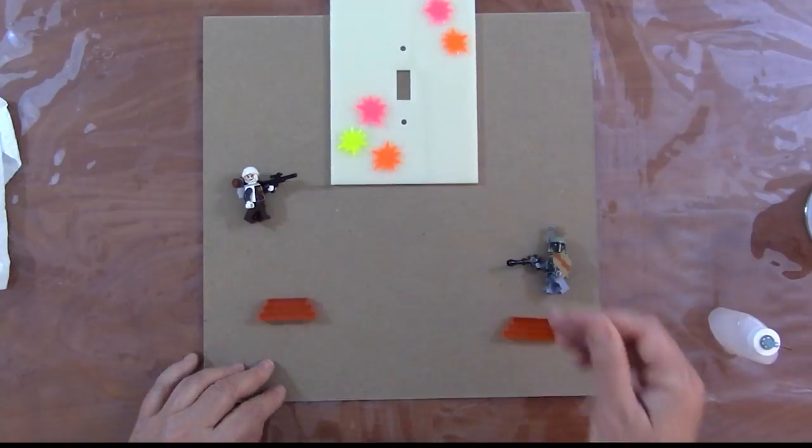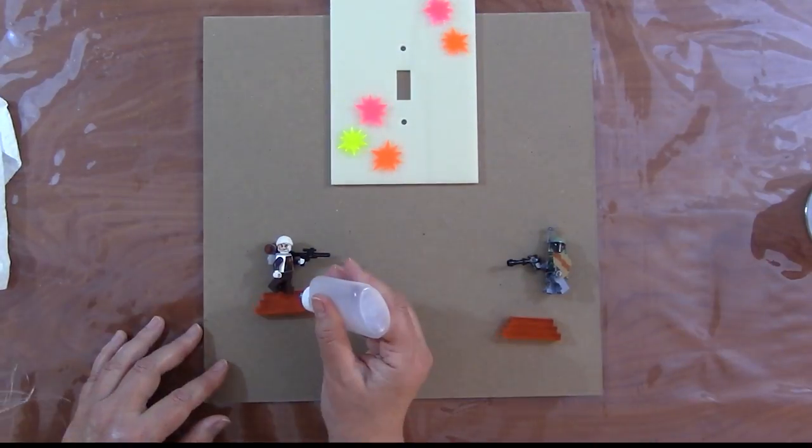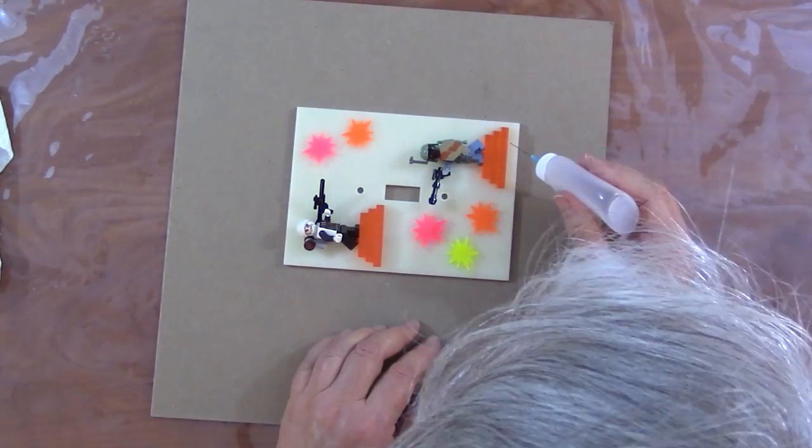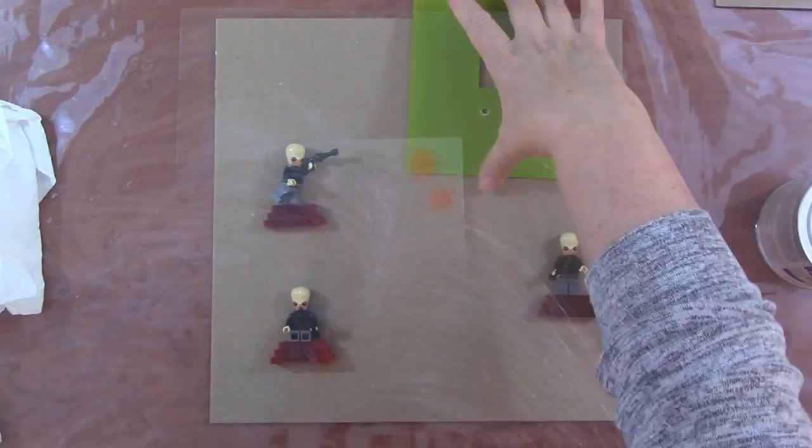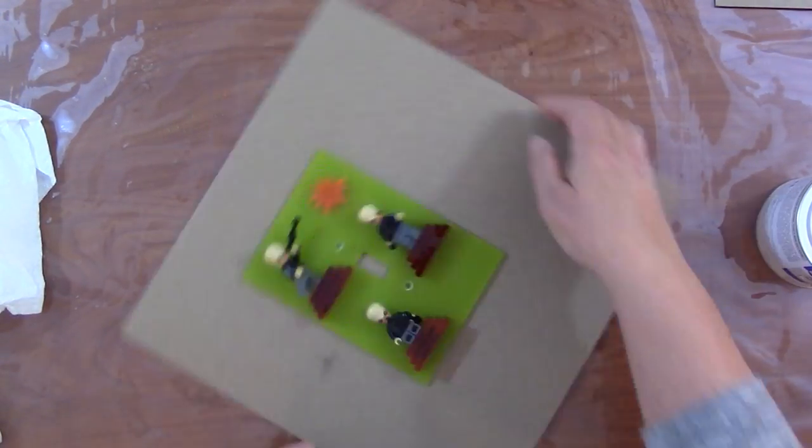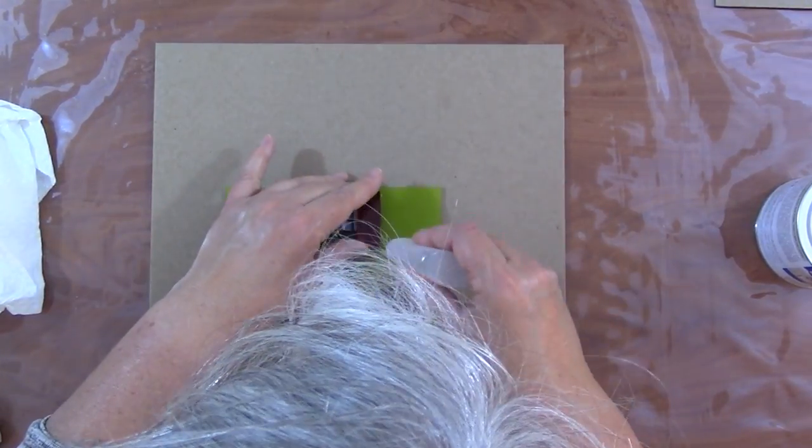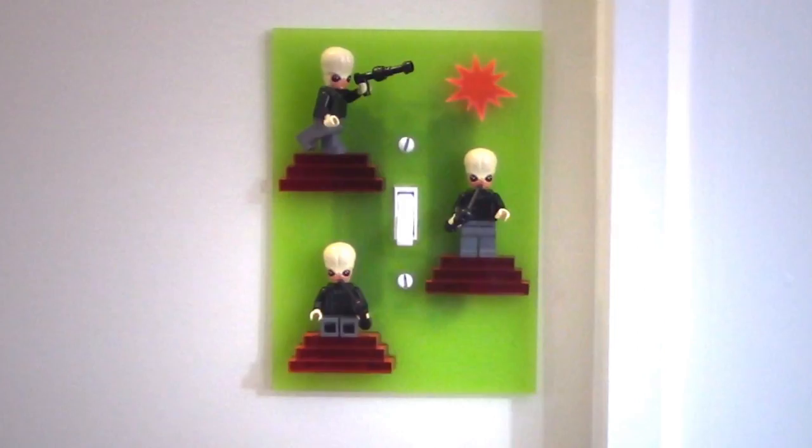On the other plates I start by fusing on the bursts. Then I fuse the people to their bases and then I fuse the bases to the switch plate. You could use the solvent to fuse the Lego characters into a given position but I left them mostly movable.